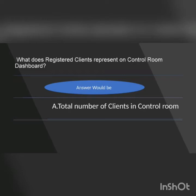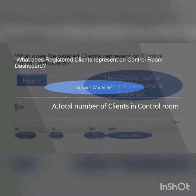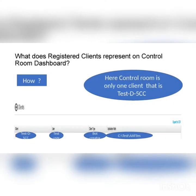If you want to register your client in the control room, the first thing is you have to make sure your user details are enabled. In the dashboard, under user management, you have to go and register your user. Then you can make sure your client is working or not.